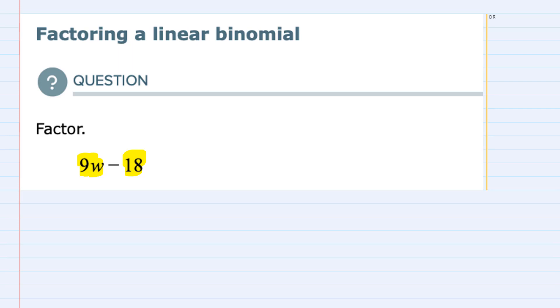The first term has a w, but the second one does not, so that's not a common factor. Looking at the numbers 9 and 18, our question becomes, can I rewrite either one of these with a common factor?